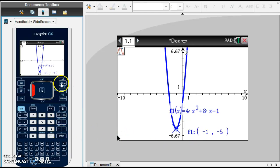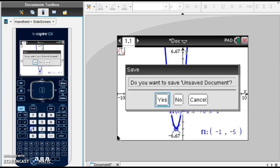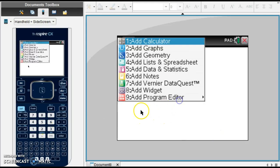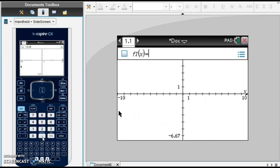Let's try another one. A new document and add a graph again. This time, let's graph negative x squared plus 4x. And hit enter.